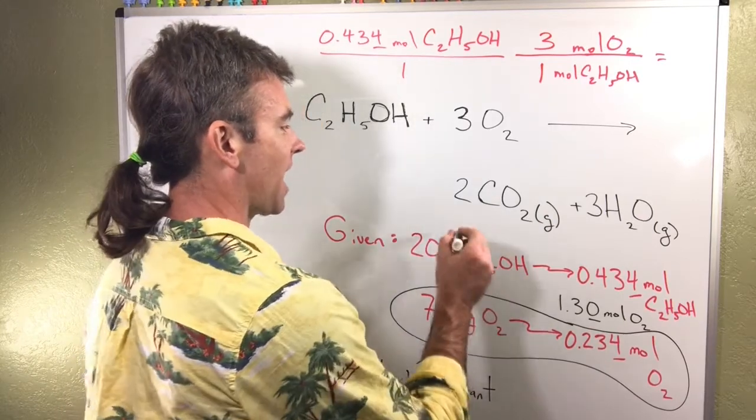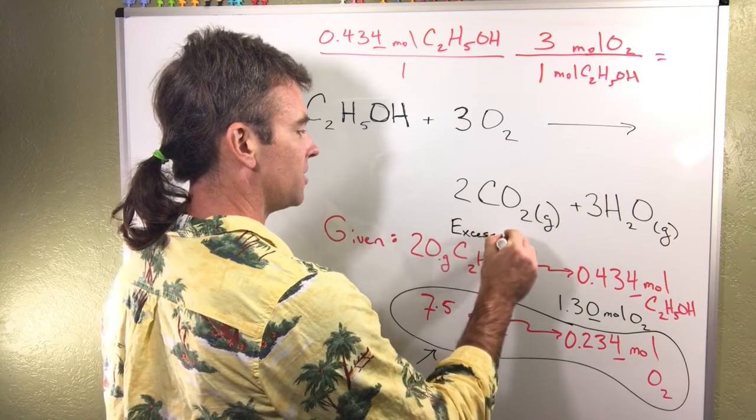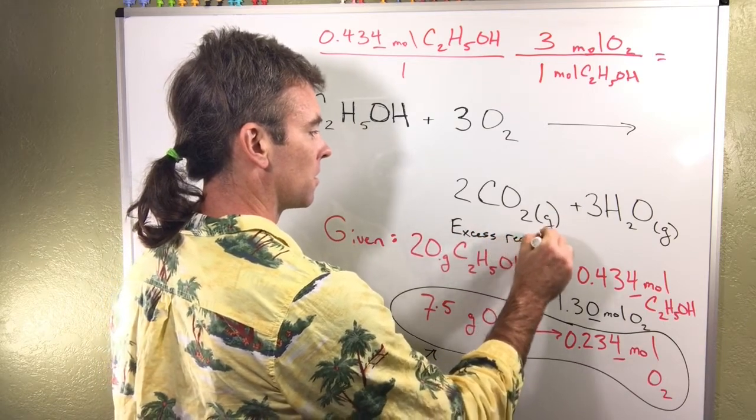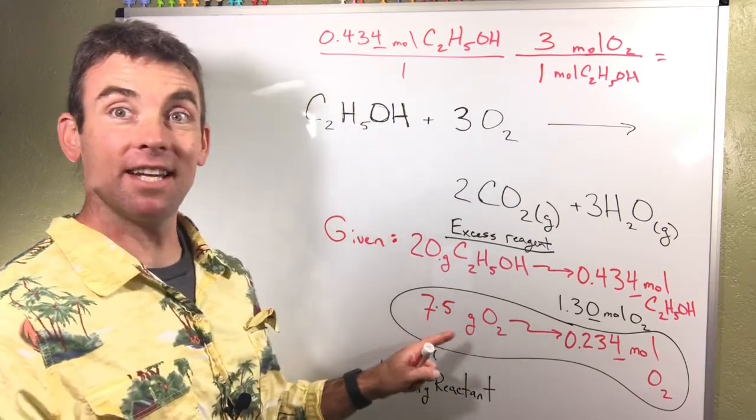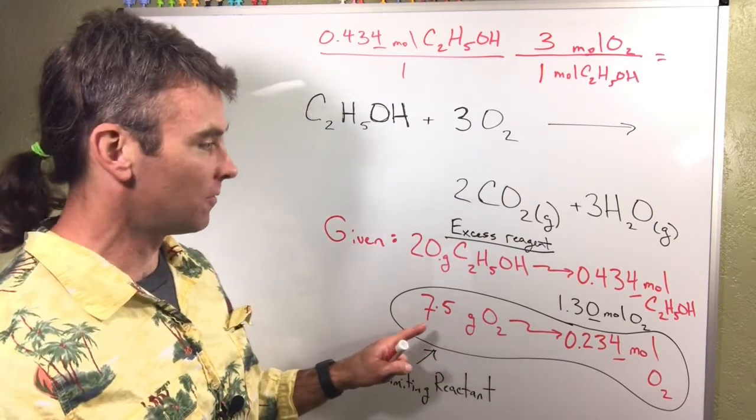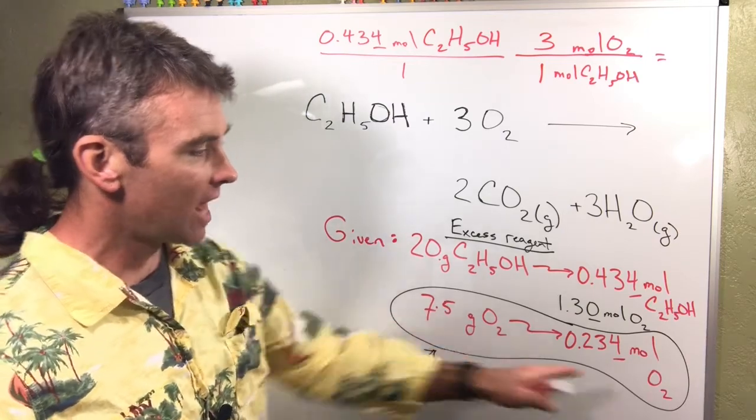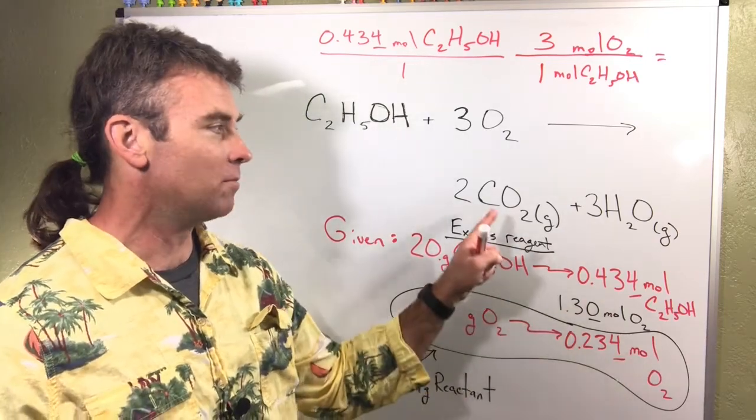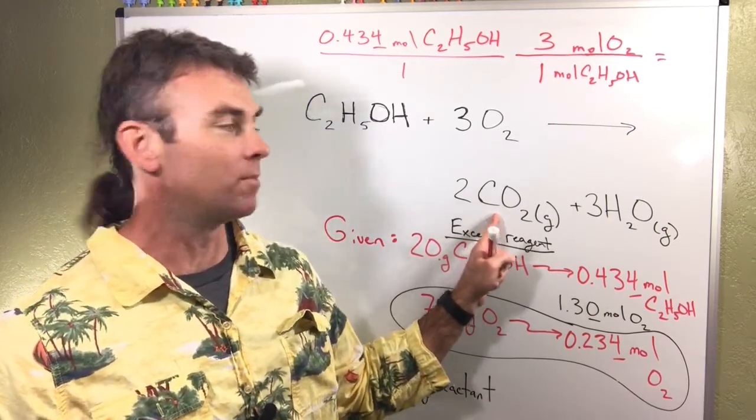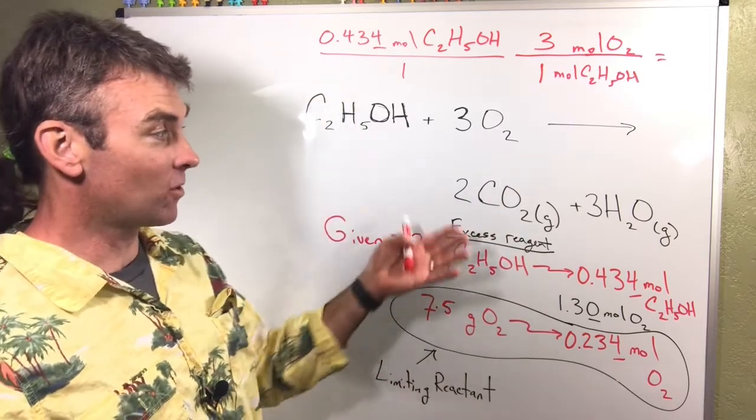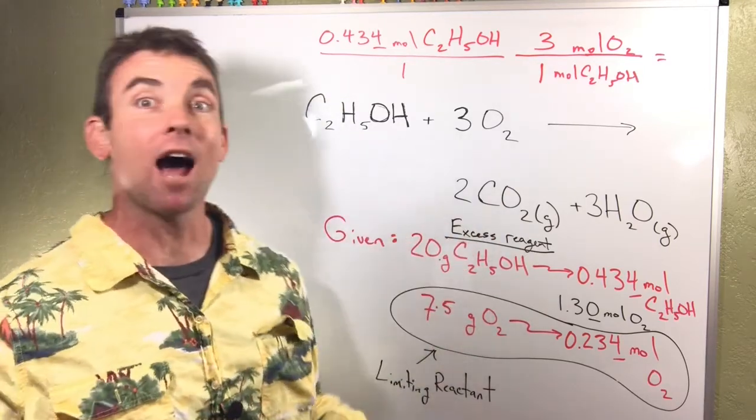This is then termed an excess reagent. We have the limiting reagent which will dictate how much product we form. Now if I wanted to, I could use that mole amount to determine how many moles of CO2 I formed and how many grams of CO2 I could have formed. There'll be a certain amount of this excess reagent just hanging out not reacting in the carburetor compartment.